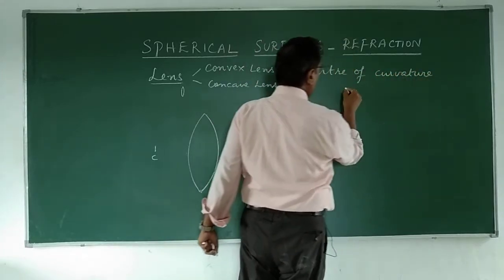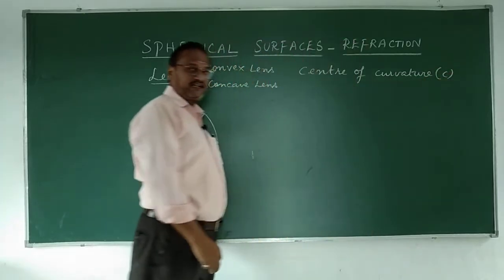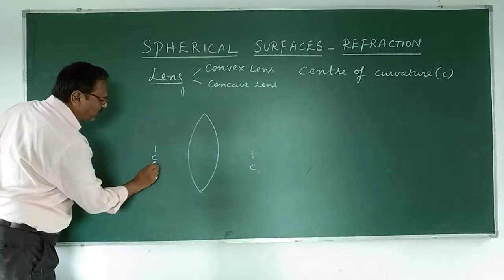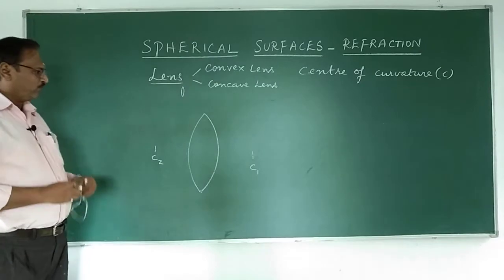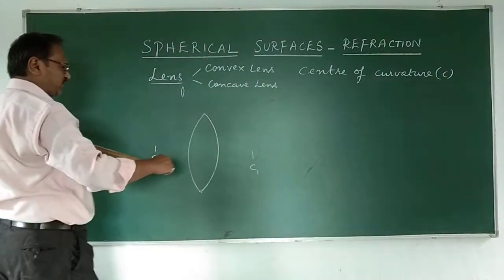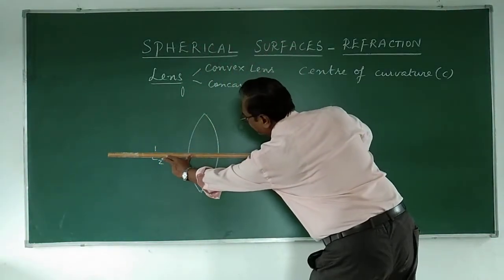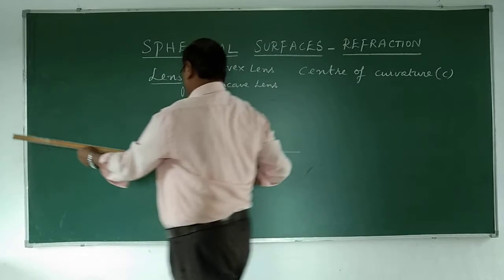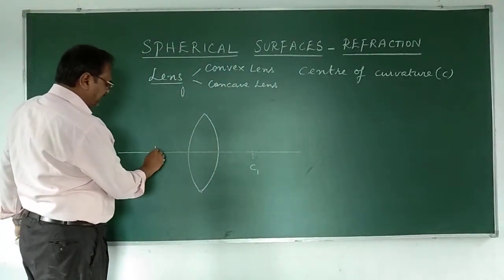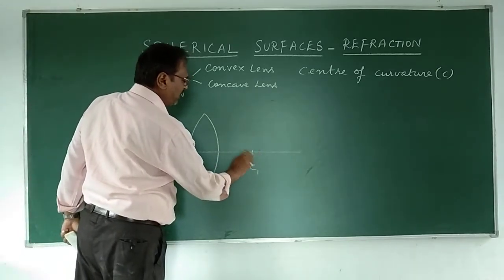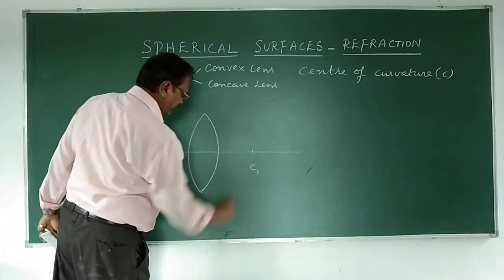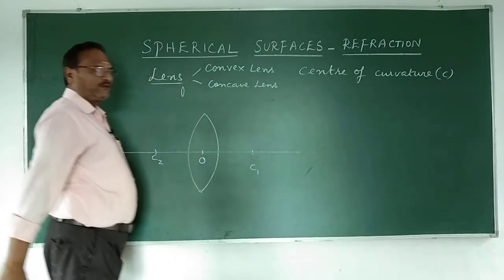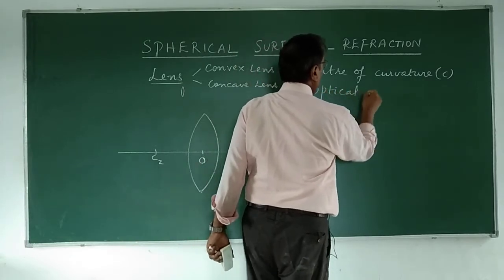There are two centers of curvature: C1 and C2. I connect these two centers with a straight line through the middle. The centers are connected together, and the middle point of the lens is called the optical center.